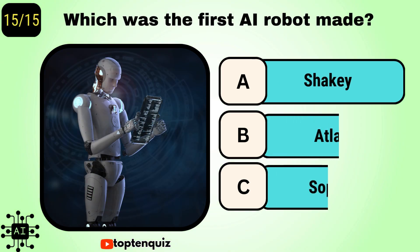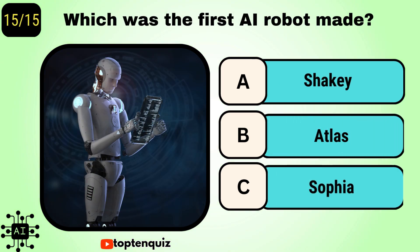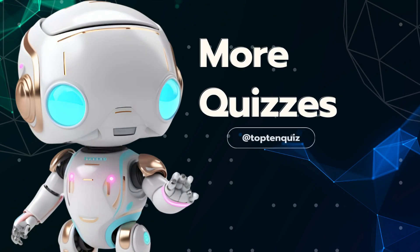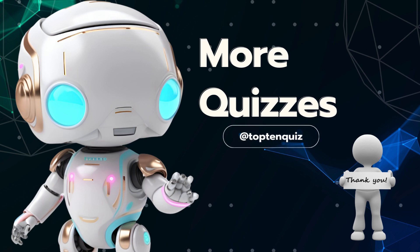And the final question, number 15: Which was the first AI robot made? The answer is Shakey. Comment your score below. Hope you enjoyed the quiz. Thanks for watching.